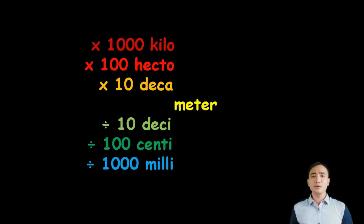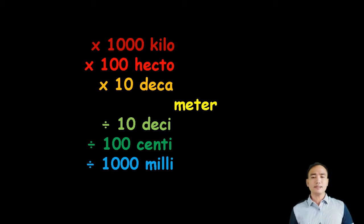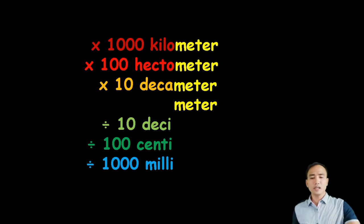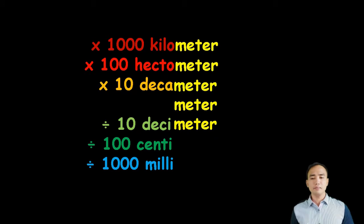The standard unit of measurement for length in the metric system is called meter. Ten times longer than a meter is decameter. One hundred times longer than a meter is called hectometer. One thousand times longer than a meter is called kilometer. While 10 times shorter than a meter is called decimeter, 100 times shorter is centimeter, and 1,000 times shorter is millimeter.